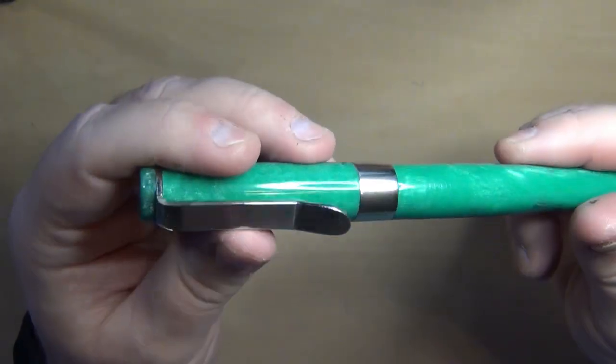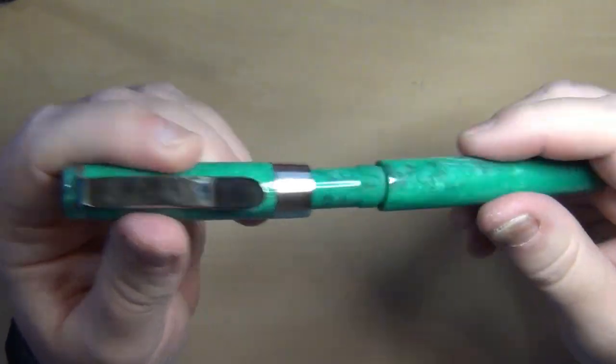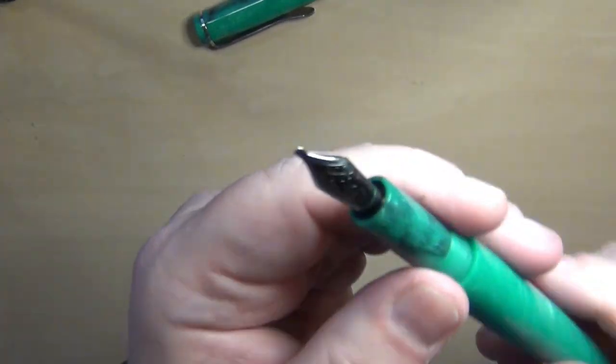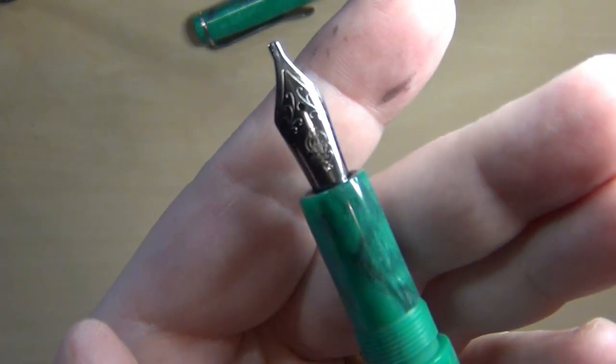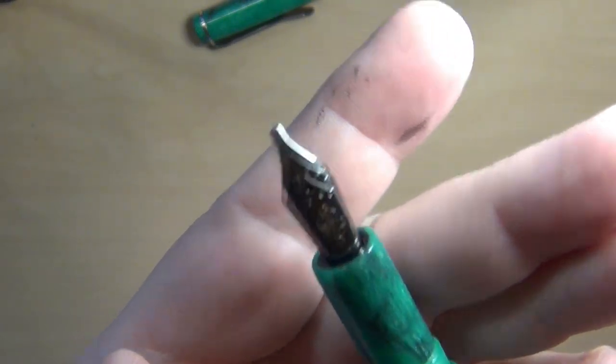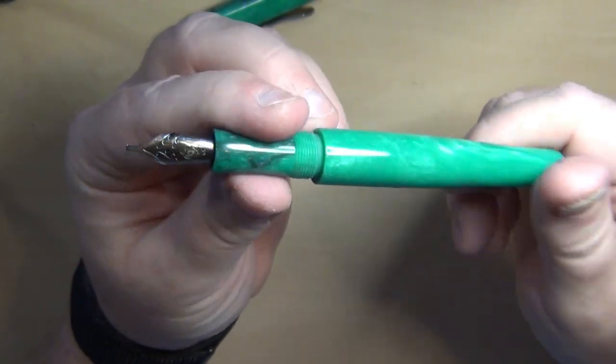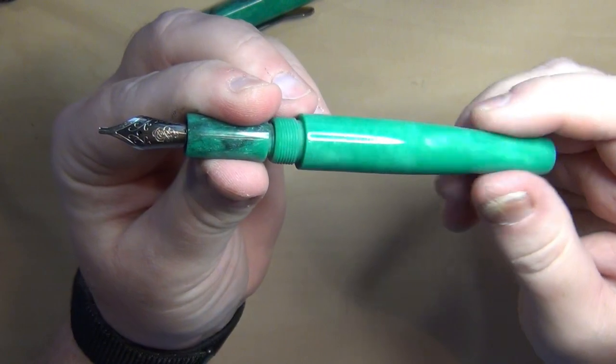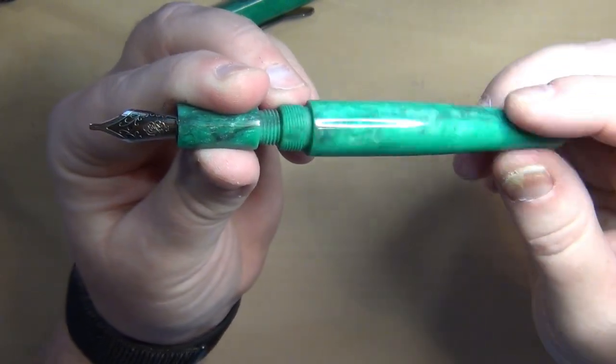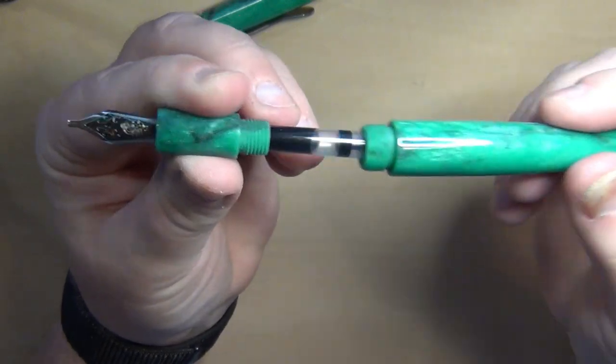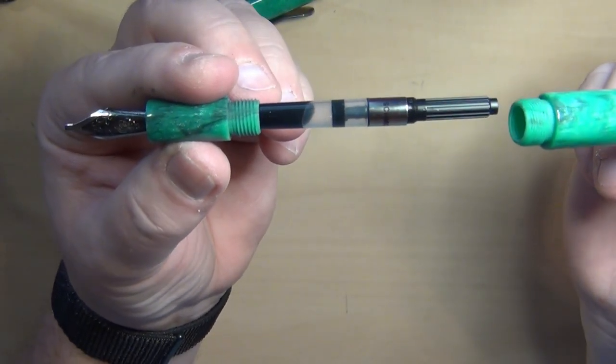So taking a look at the finial and the cap band down here, it does screw out, and there you've got a Jim Heinz branded 1.5 stub nib. That Schmidt converter came with that particular pen, by the way.